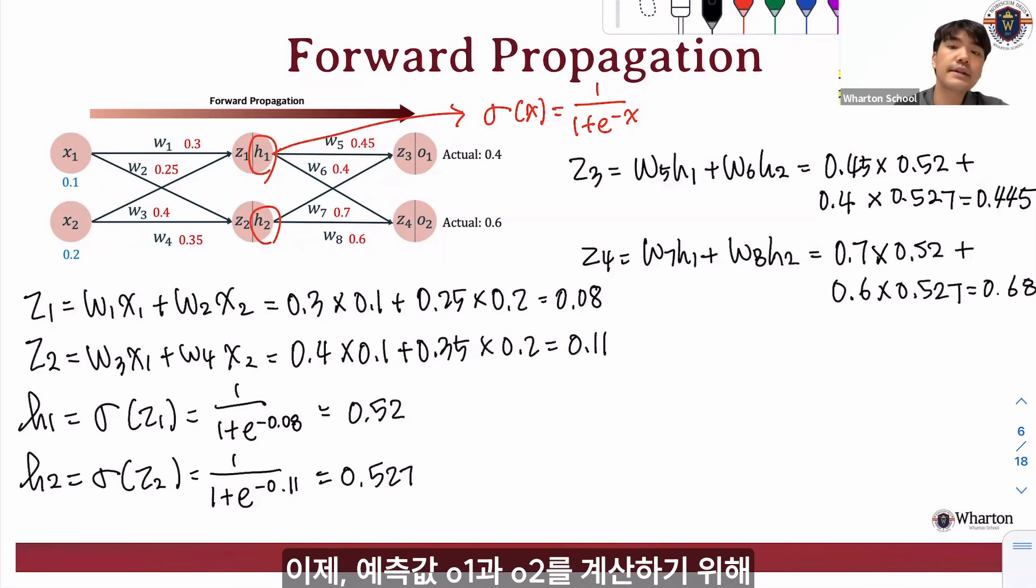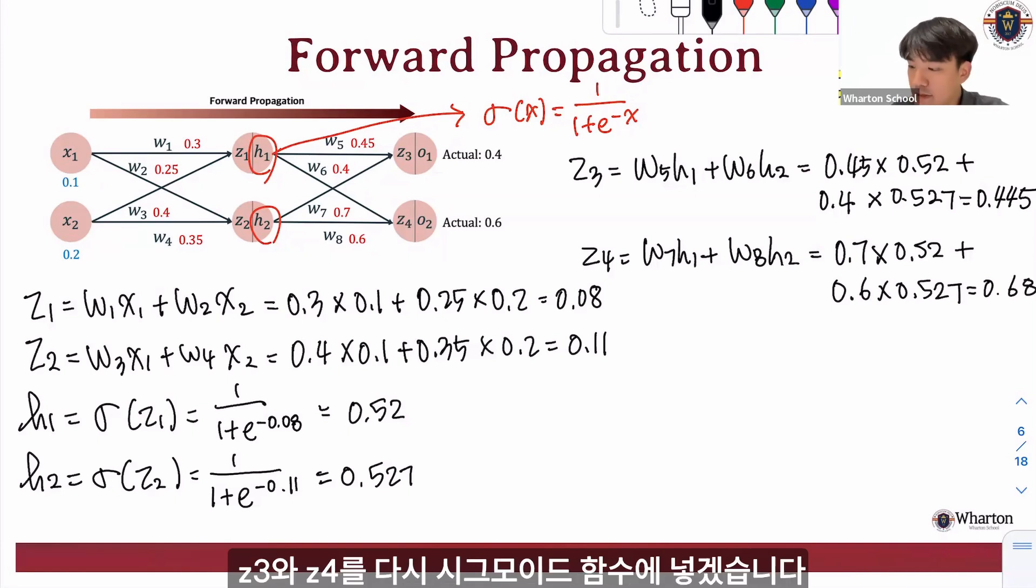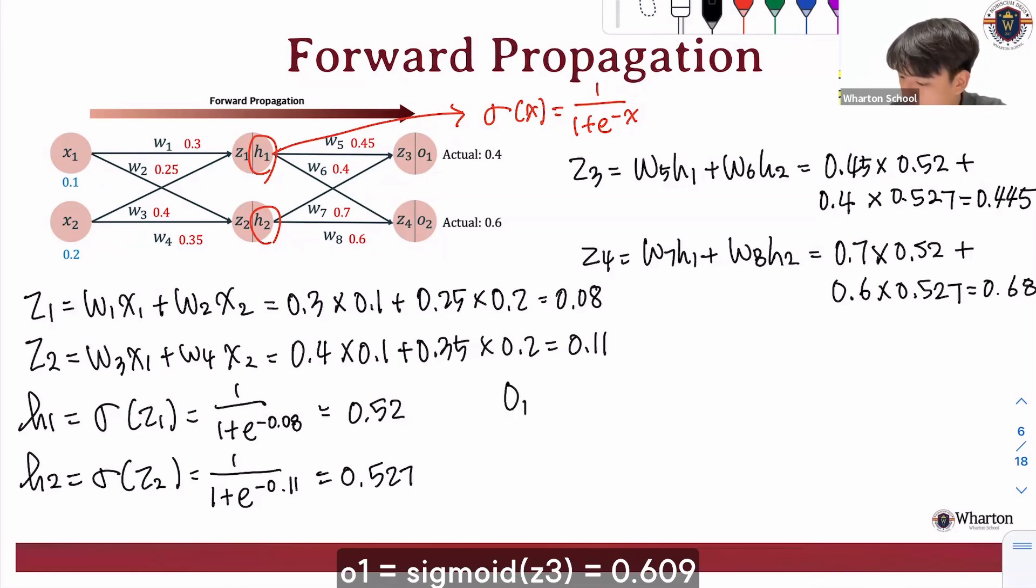Now to calculate predicted outputs, o1 and o2, we again put z3 and z4 into the sigmoid function. So we get o1 equals sigmoid of z3, which is 1 over 1 plus e to the negative 0.445, which gives us 0.609.